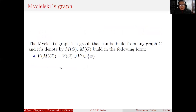Now I'm going to describe the Mycielski's graph. The Mycielski's graph is a graph that can be built from any graph G and is denoted M(G). The vertex set of M(G) is equal to the union of the vertex set of G, a set V′ which is a copy of the vertex set of G, and a singular set containing just one vertex called W.